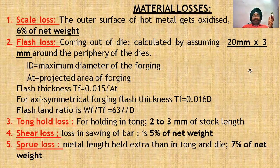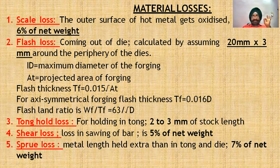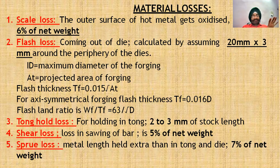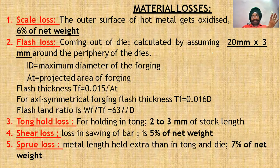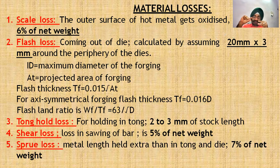The first material loss is scale loss. In hot forging, the outside surface undergoes oxidation and scaling. Scale loss is normally calculated as 6% of the net weight. Net weight equals volume multiplied by density. The second is flash loss — the flash that comes out of the die. It is calculated by assuming a flash cross-section of 20 mm width and 3 mm thickness.